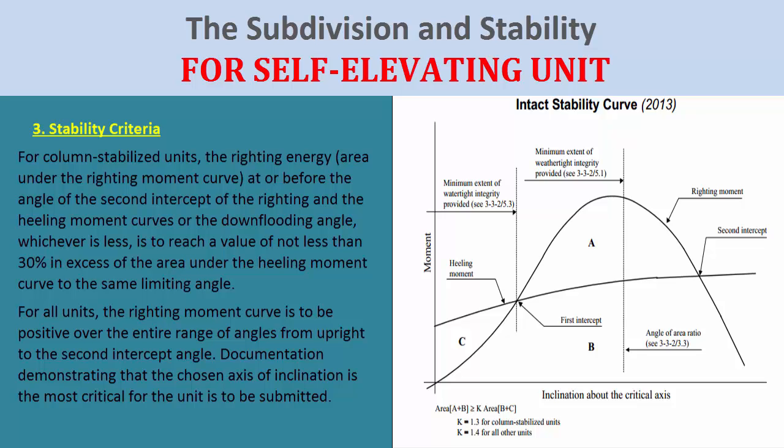For column-stabilized units, the righting energy — the area under the righting moment curve at or before the angle of the second intercept of the righting moment curve — is to reach a value of not less than 30% in excess of the area under the heeling moment curve to the same limiting angle. For all units, the righting moment curve is to be positive over the entire range of angles from upright to the second intercept angle. Documentation demonstrating that the chosen axis of inclination is the most critical for the unit is to be submitted.